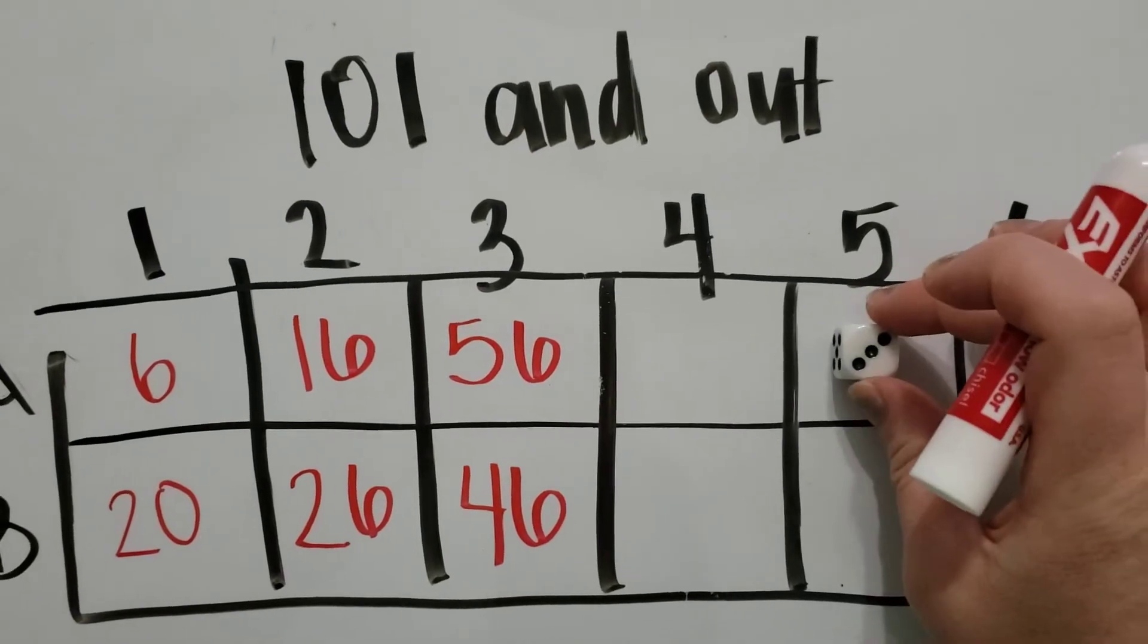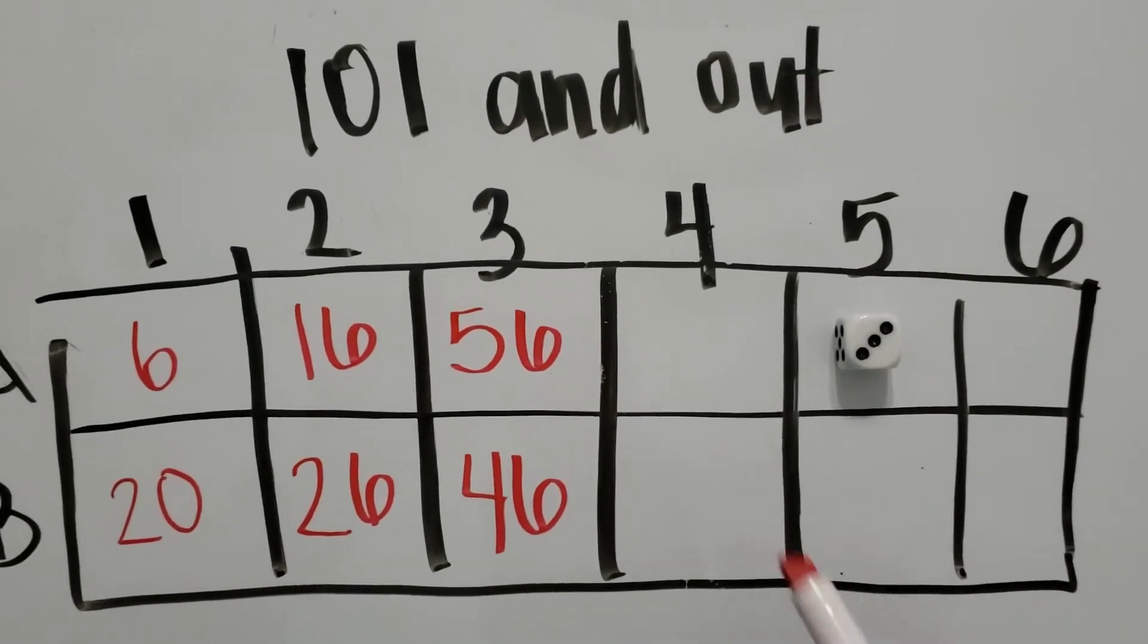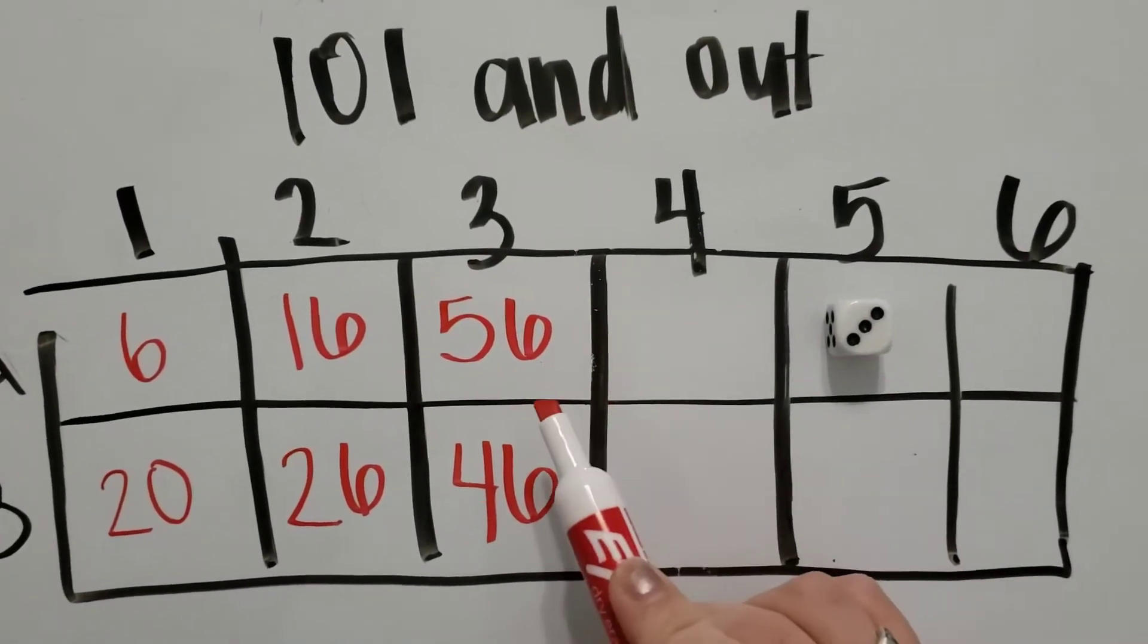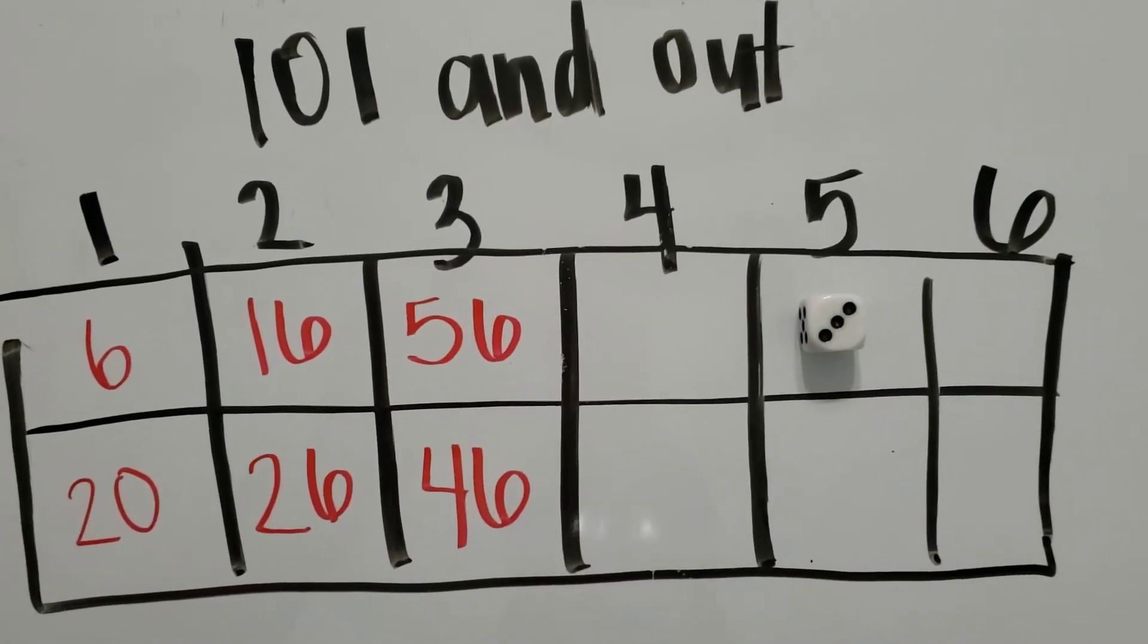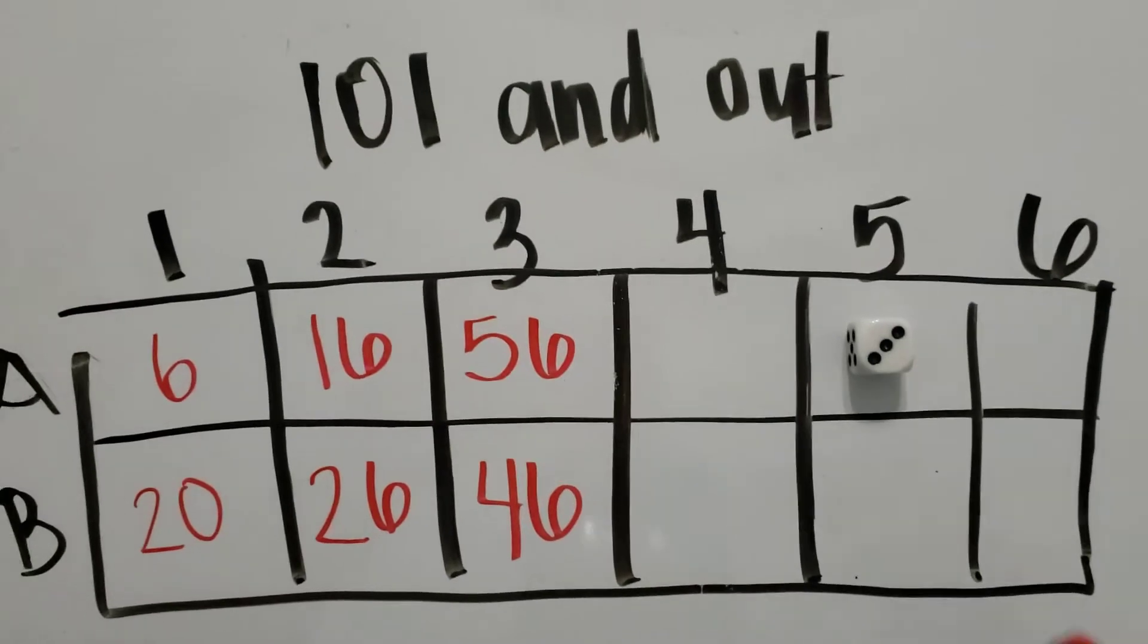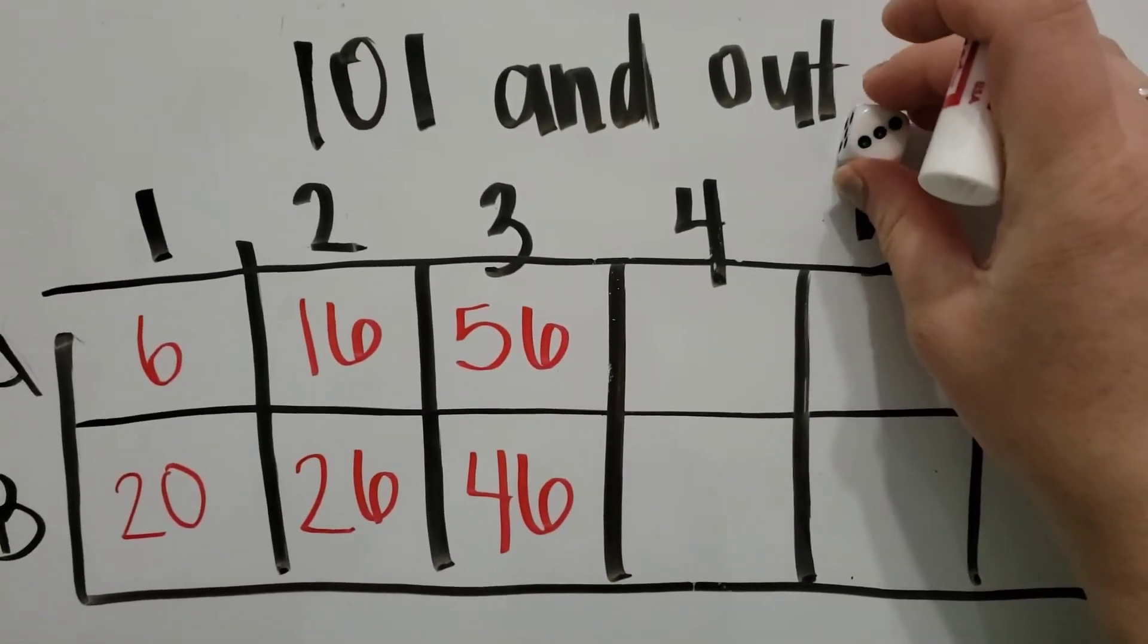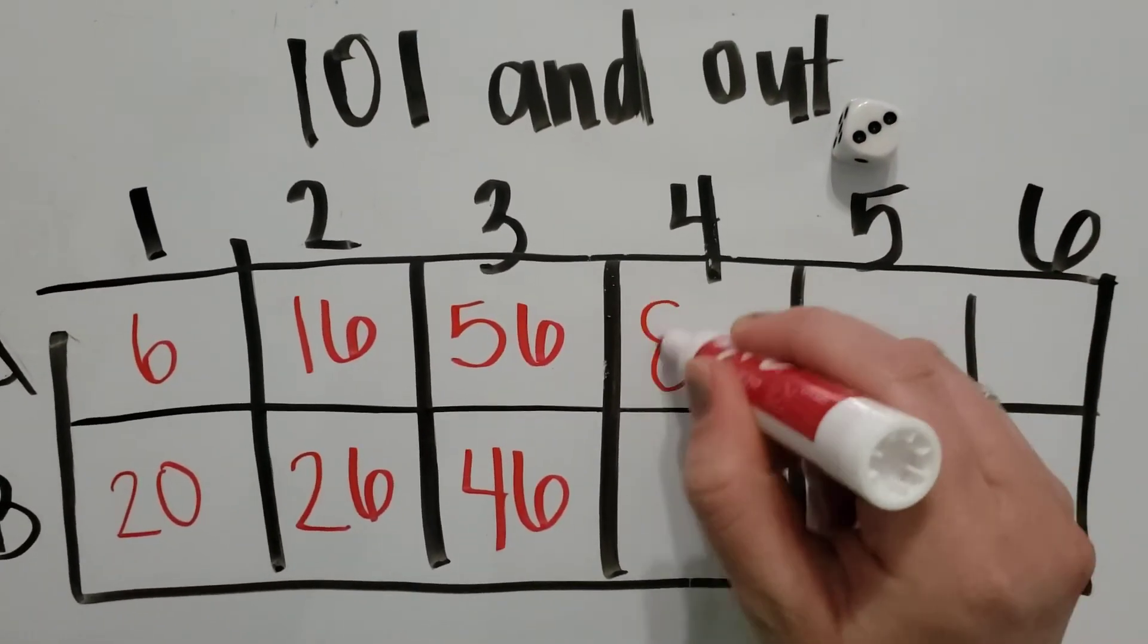Team A would roll the dice and they rolled a three. They can either make, if I added three, it would be 59. And if I added 30, it would be 86. I think I'm going to make that 30 so that I can be at 86.